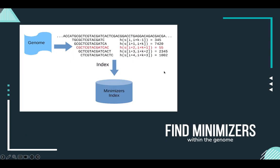In our algorithm, the first step is that we take the genome, break it into windows, and for each window we get all the k-mers and apply a hashing function to them, picking the minimizer for each window of the genome.